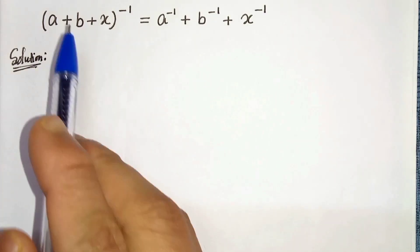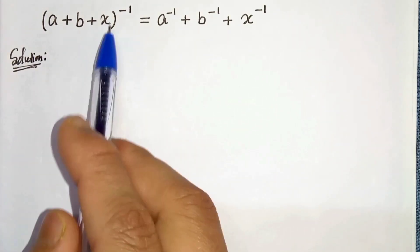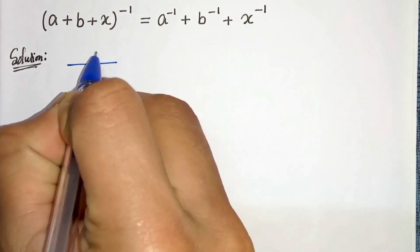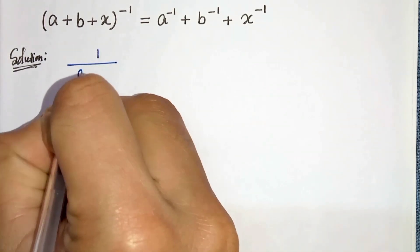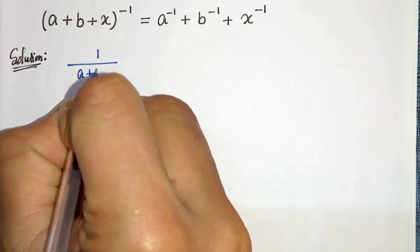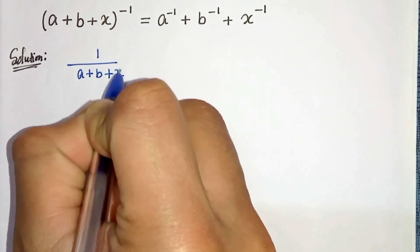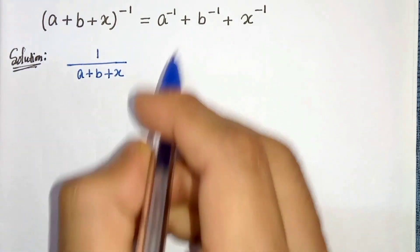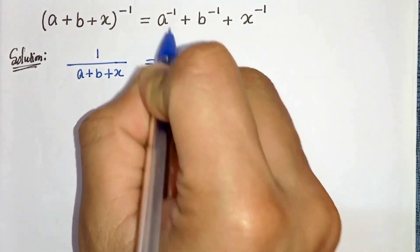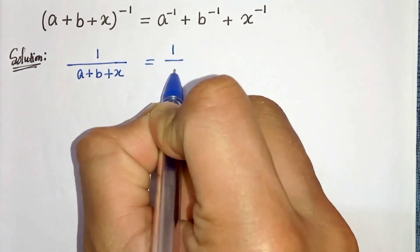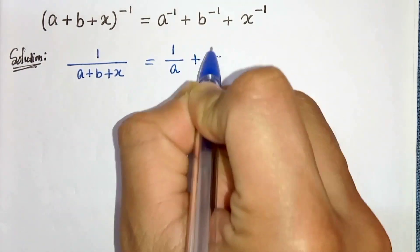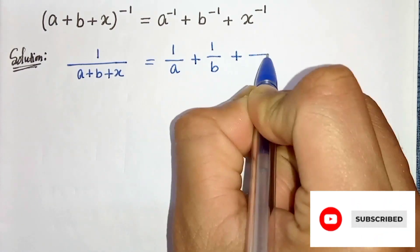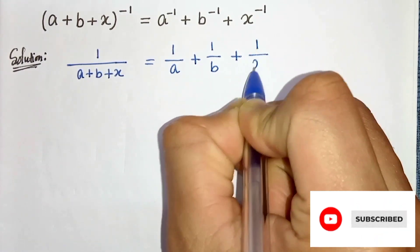First of all we can write (a + b + x) to the power minus 1 as 1 divided by (a + b + x). On the right hand side we can write a to the power minus 1 as 1 by a, plus b to the power minus 1 as 1 by b, plus x to the power minus 1 as 1 by x.